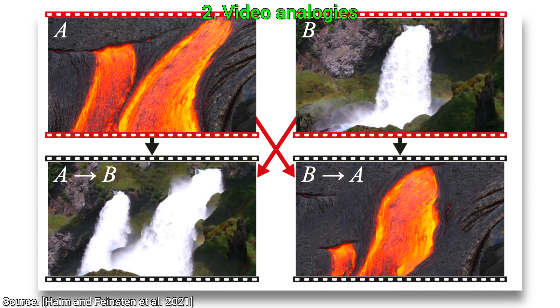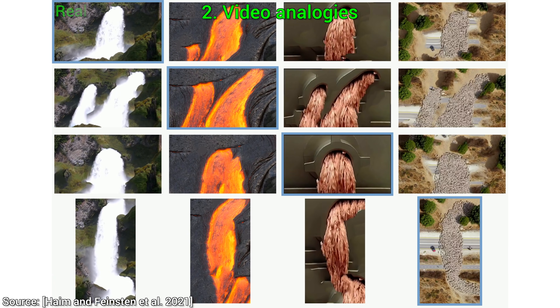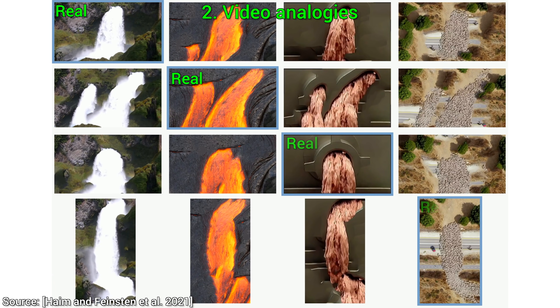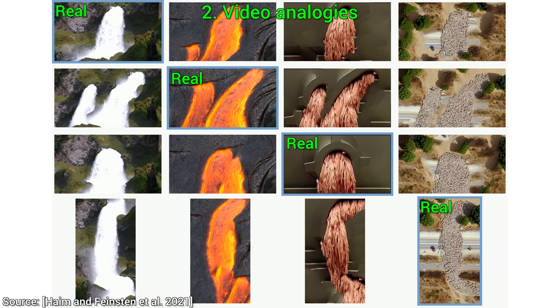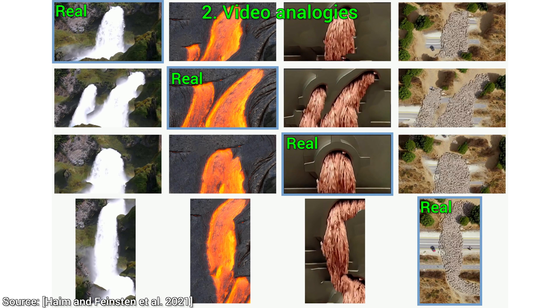Video Analogies makes it possible for us to mix two videos that depict things that follow a similar logic. For instance, here, only four of these 16 videos are real — the rest are all generated.